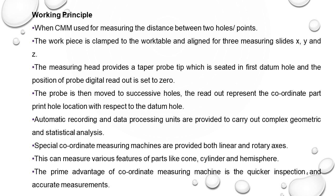The measuring head provides a tapered probe tip which is seated in the first datum hole, and the position of the probe digital readout is set to zero. Suppose if you want to take a radius — first, we touch the probe at any position and that value is taken as zero. Then the probe is moved to the next hole, and the coordinate readout gives the hole location with respect to the datum hole, so the centre-to-centre distance between the holes can be calculated.